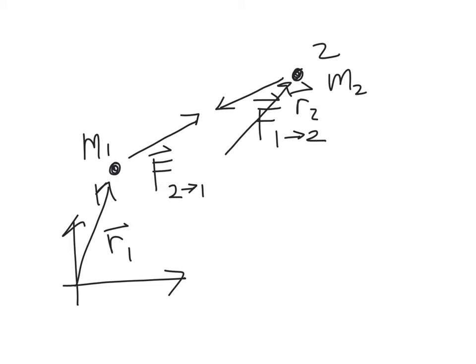The system we're considering has two masses, m1 and m2, located at positions r1 and r2 relative to some inertial coordinate system. The forces they exert on one another are the force of particle 2 on 1 and the force of particle 1 on 2.